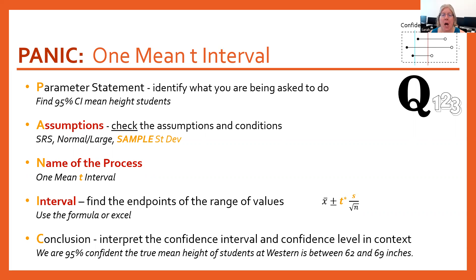We'll use Excel for that because t* changes values based on the sample size, so there's a lot to look up and calculate. Excel will automatically find it for you. The conclusion stays exactly the same — for example: we are 95% confident the true mean height of students at Western is somewhere between 62 and 69 inches.